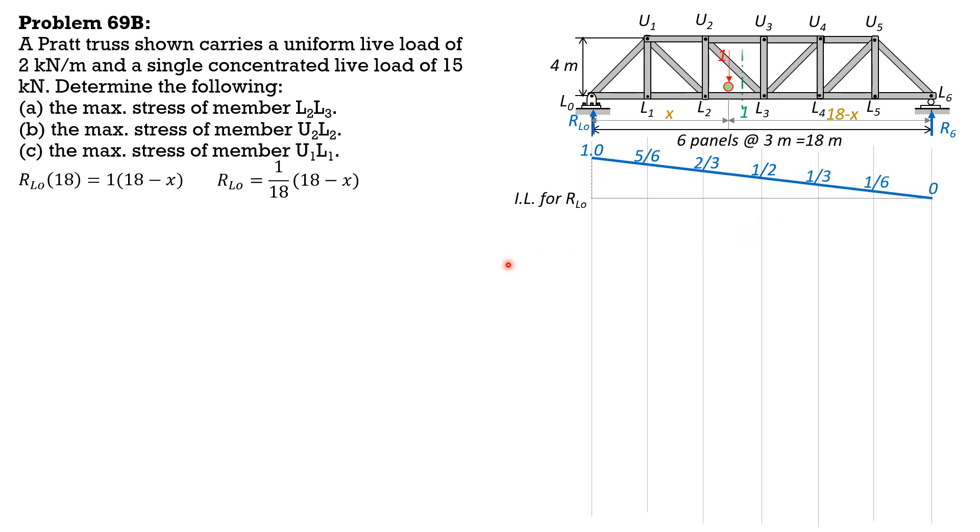Then let's consider section to the left of section 1. Let's consider that and draw the free body diagram, which is this. Let's call this distance from LO as X. Then the distance of the unit load from, imaginary unit load from U2 is 6 minus X, because each panel is 3 meters long.